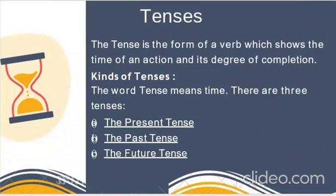You might have been studying tenses from a very lower grade. Tense is a form of verb which shows the time of an action or the degree of its completion — whether an action is going on, has been completed, or will happen in the future. Based on that, there are three major types: present tense, past tense, and future tense, and each has sub-parts.